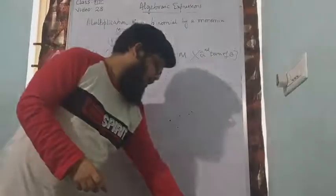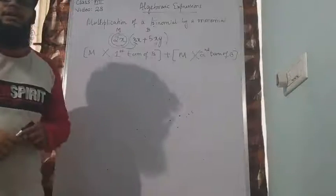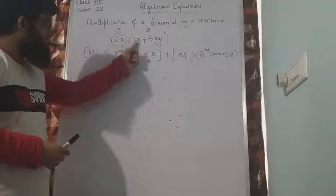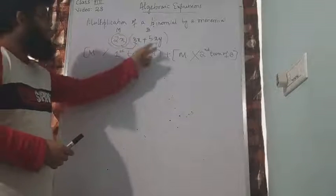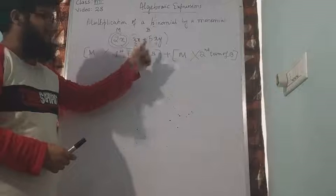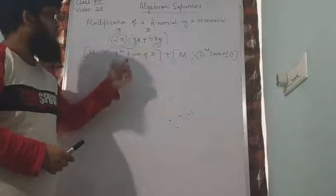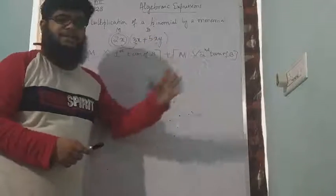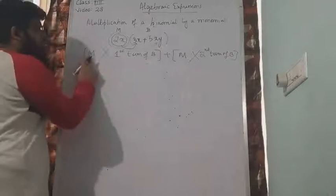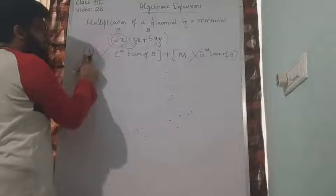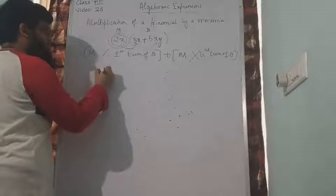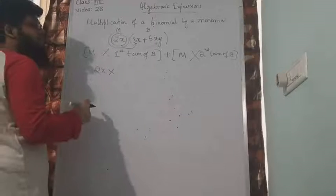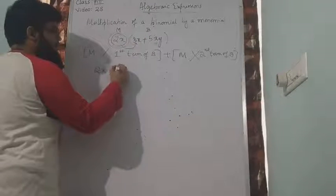Let me write that now. Monomial which is 2x into first term of binomial. The same term monomial should be again multiplied with second term of binomial which is 5xy. Monomial 2x into the first term of binomial. The first term of binomial is 3x.